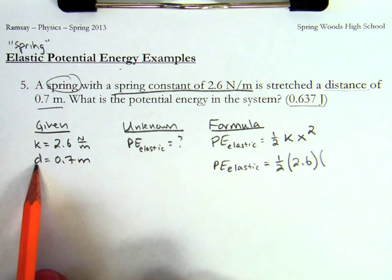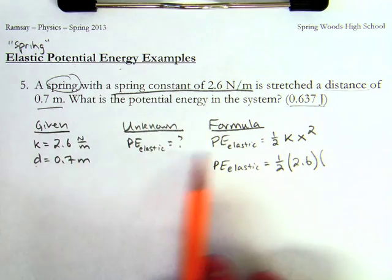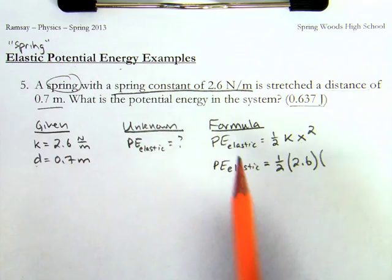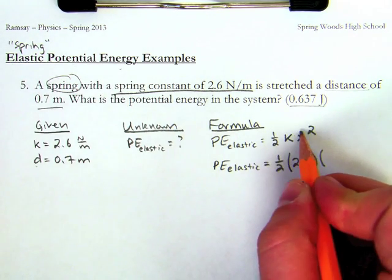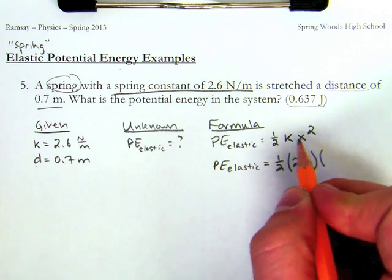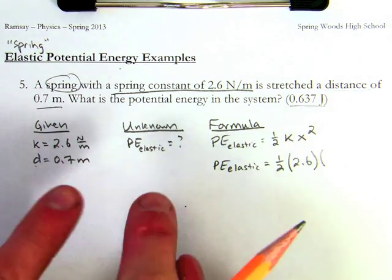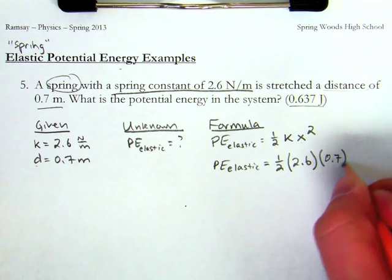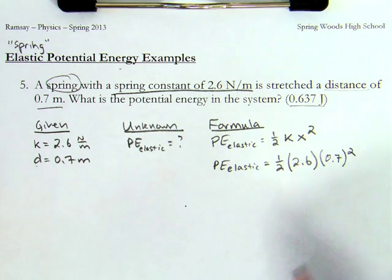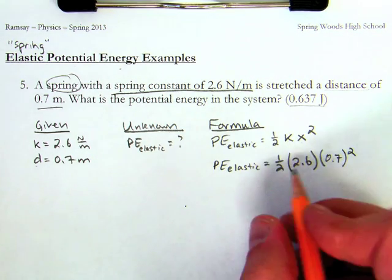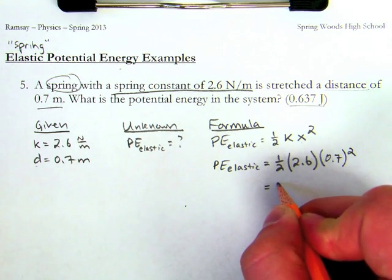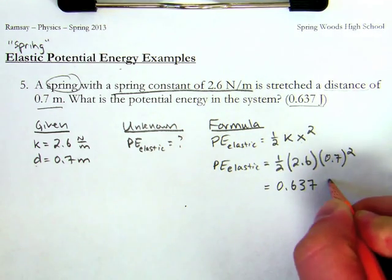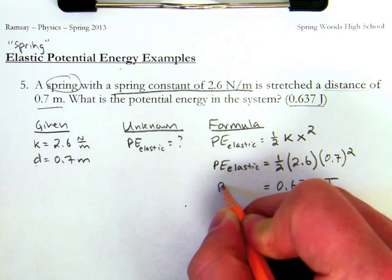But I know in the spring potential energy situation, I'm going to use x to describe the distance an object is either compressed or stretched. So I'm going to plug in the distance of 0.7 meters here, and as I plug that in the calculator, I've done it right. This is going to give me 0.637 joules of elastic potential energy.